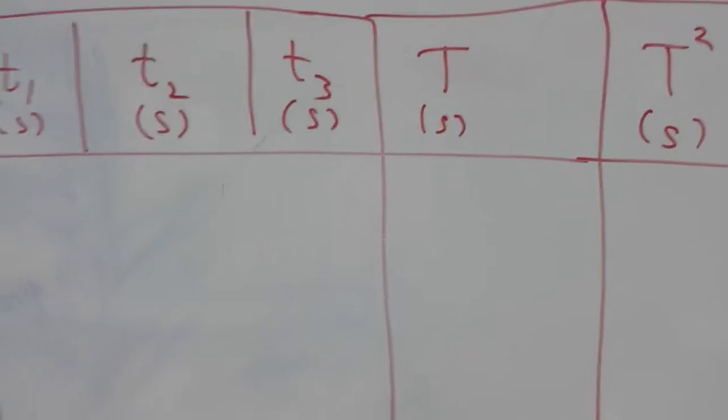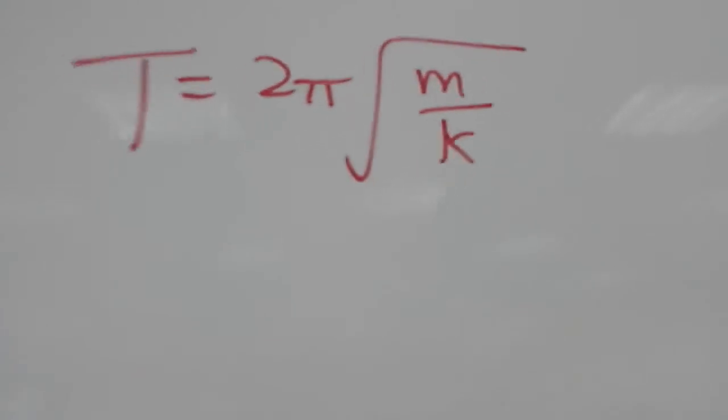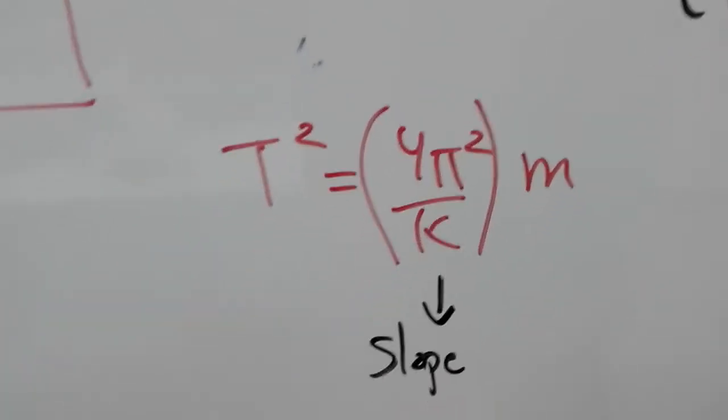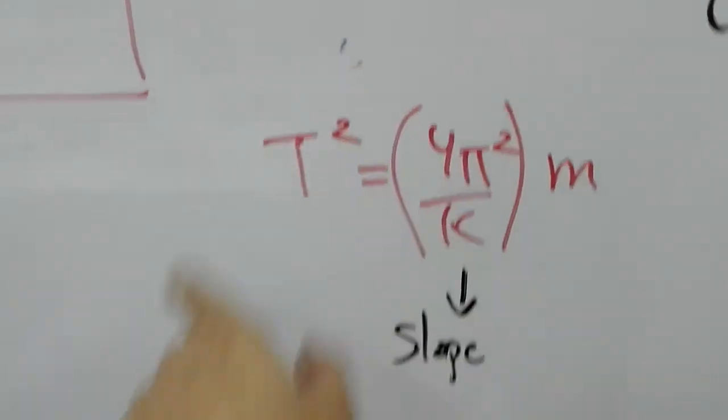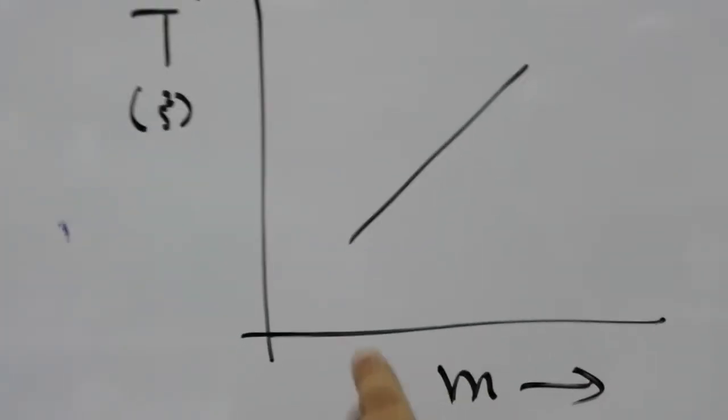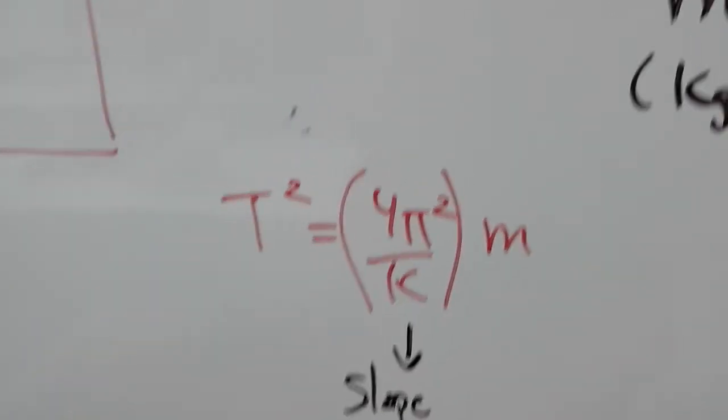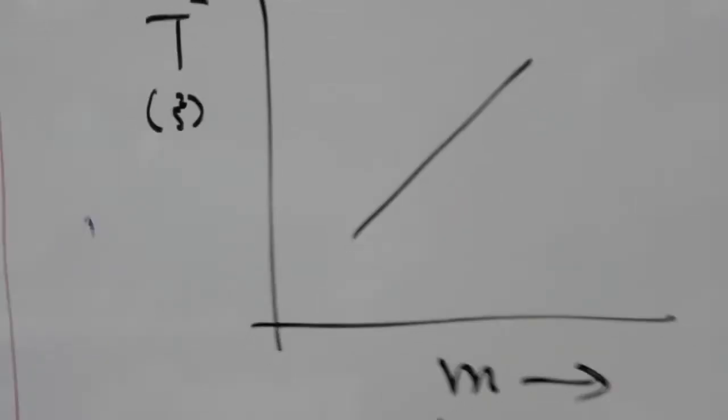Once you have that, you're gonna make a plot of T squared versus the mass. Why do we do that? Because the time period of the spring is equal to 2 pi times square root of m over k. When you square this equation, you get T squared equal 4 pi squared divided by k times m. We're gonna plot T squared versus m, so it's a linear relationship. The slope of this line is 4 pi squared over k. You can easily get the value of k for this part by using the slope that you get from Excel.